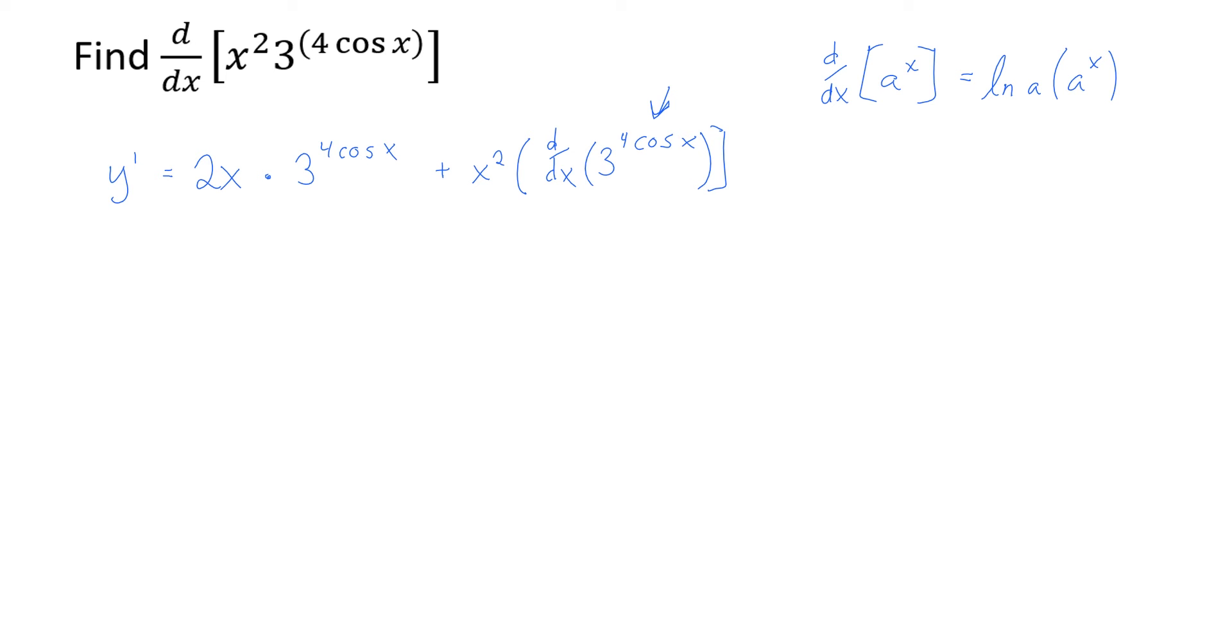But then what happens, we don't just have an x up there, we have a function. So maybe if I write it in sort of the chain rule formula, what if I have a to the u, where u is another function? Then it becomes natural log of a times a to the u. So again, your base function, that a to the u, still pops up. But now, you've got to multiply by du dx, the chain rule. You've got to multiply it by the derivative of that inside function.